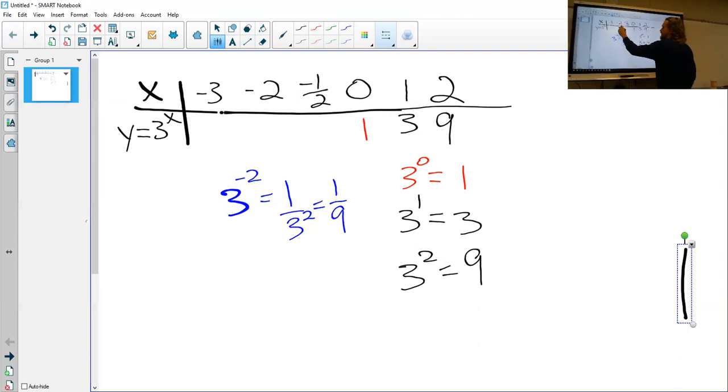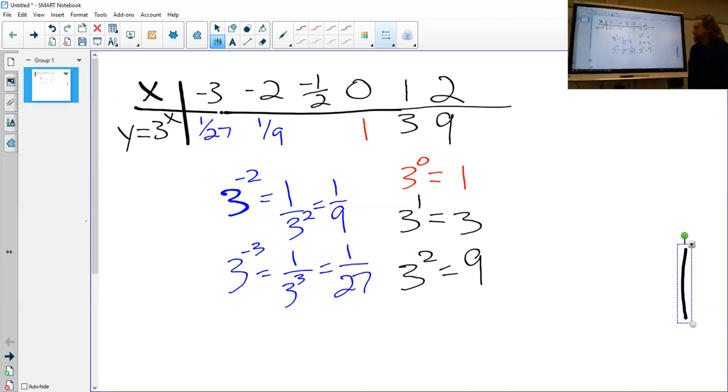So 3 to the negative second is 1 over 9. Okay? And then we can do the same thing for 3 to the negative third power. That's going to be equal to 1 over 3 to the positive third power, which is then 1 over 27.